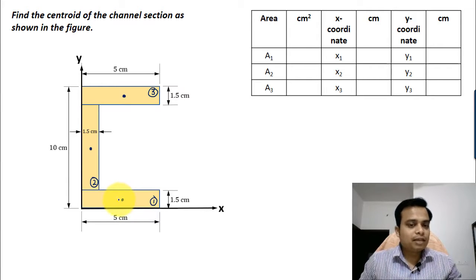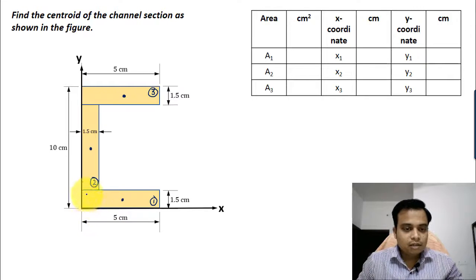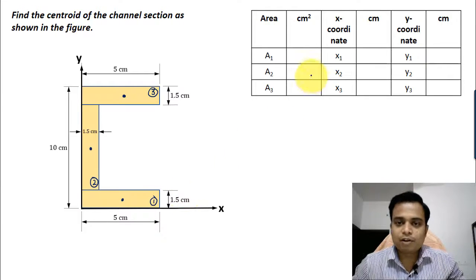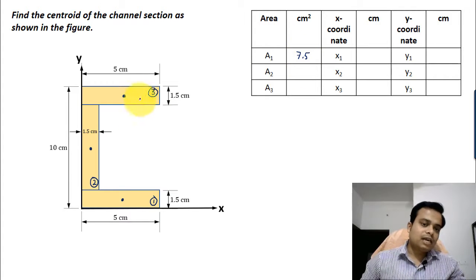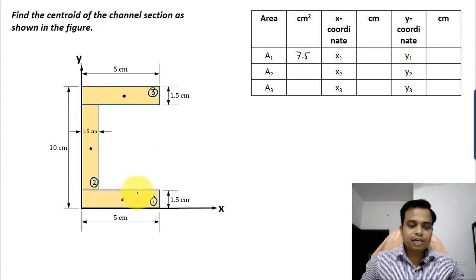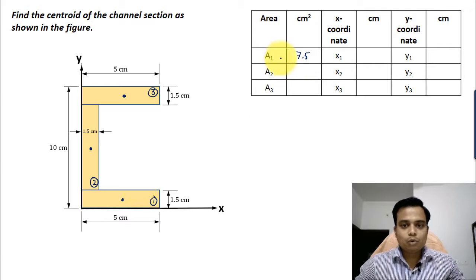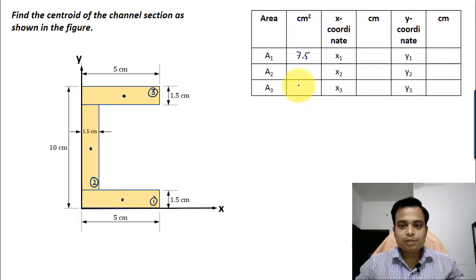Now you can clearly see this rectangle has a width of 5 and a height of 1.5, so 5 multiplied by 1.5 is 7.5. Now rectangle 3 and rectangle 1 are identical, so A1 and A3 are both going to be 7.5 each.